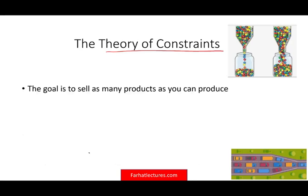The goal of any company is to sell as many products as you can produce — and hopefully that makes sense. Sometimes you might experience some sort of a bottleneck or constraint that's going to slow you down and limit your capacity to produce.